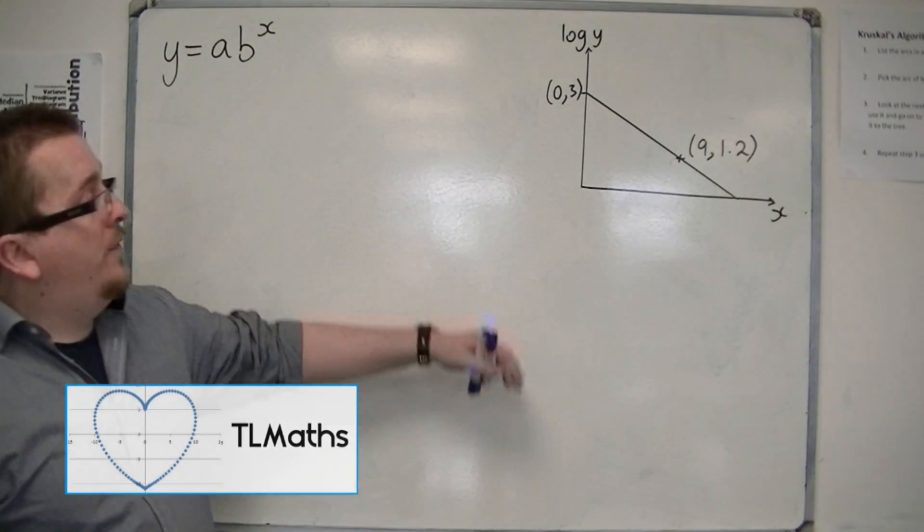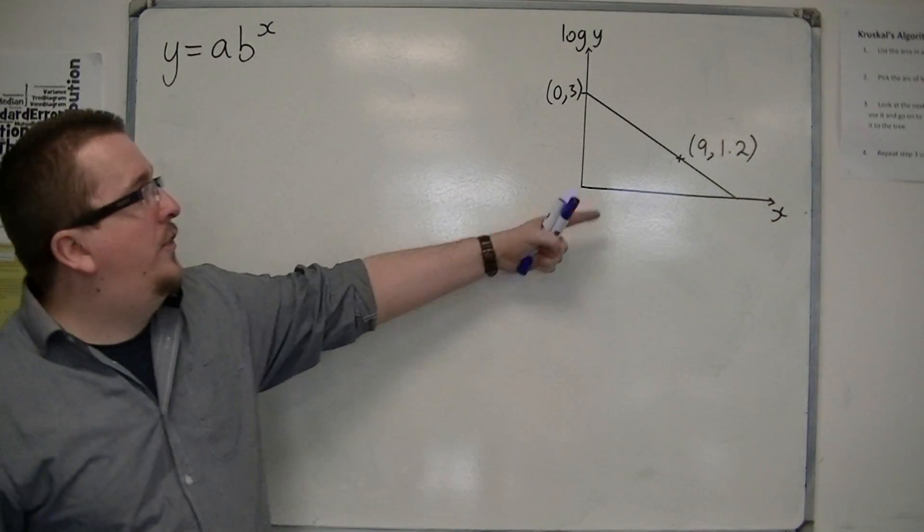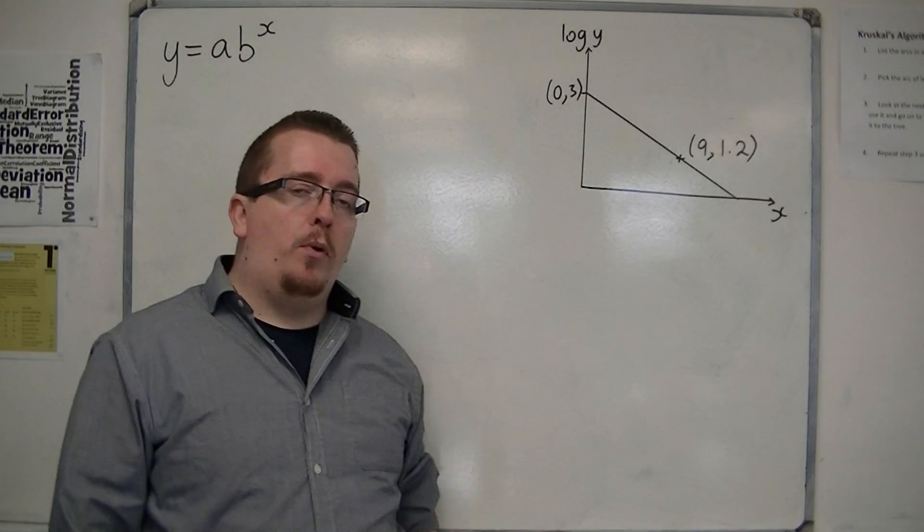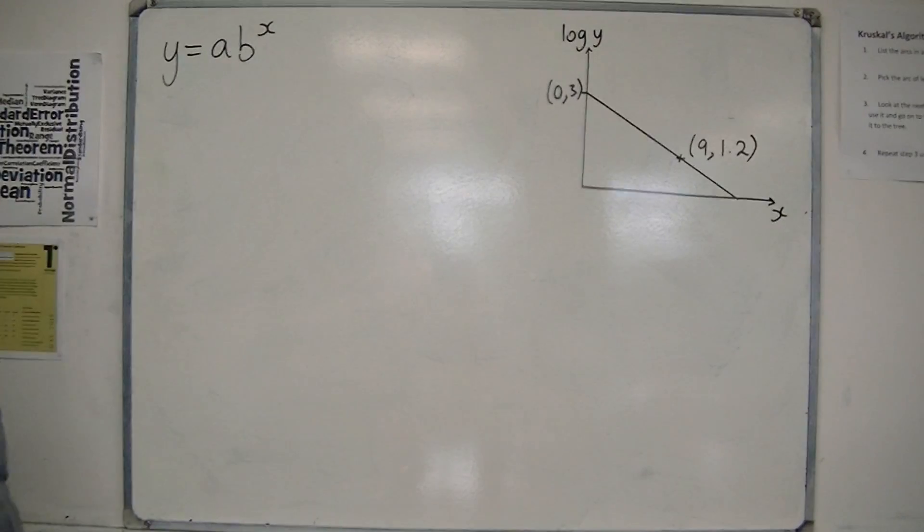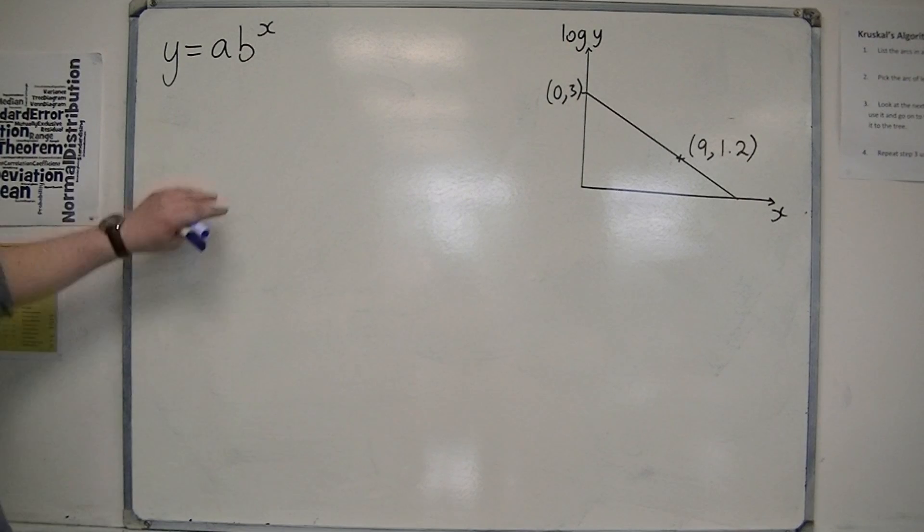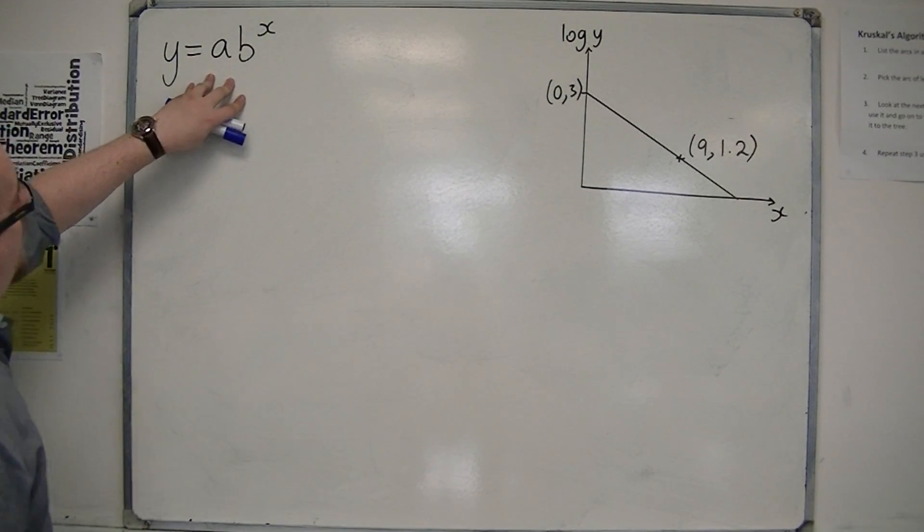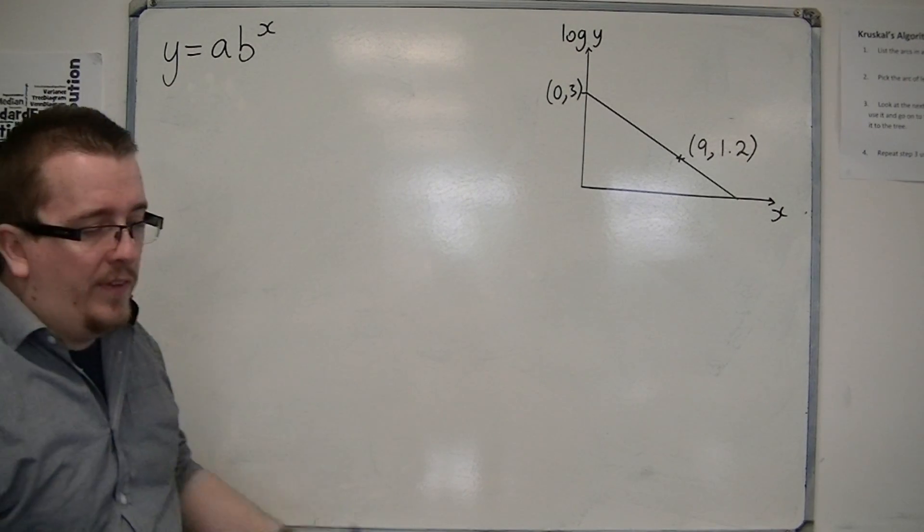In this video, I've been given the graph of x against log y. I've been given two points on the line: 0, 3 and 9, 1.2. And the original equation is going to be of the form y equals a, b to the x. This is given to me.